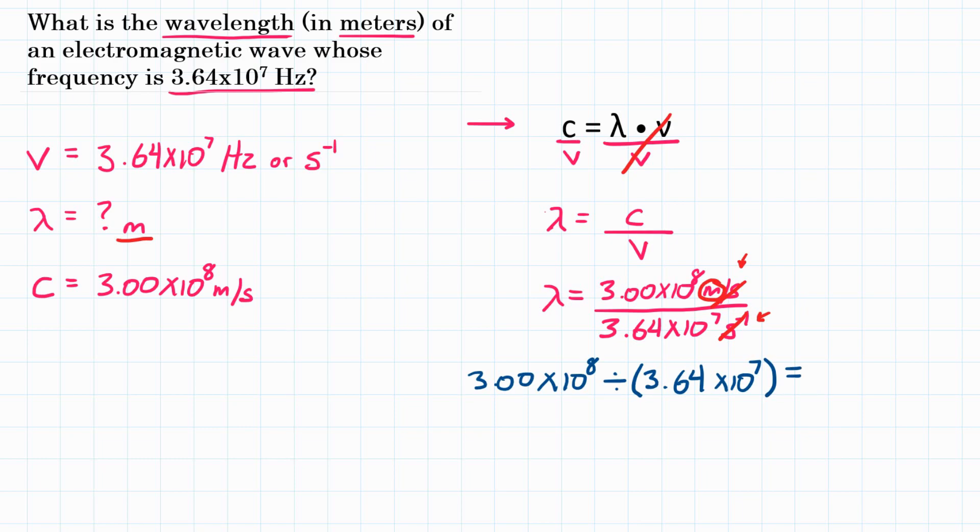Quick lesson here, if you don't put that in parentheses or if you don't use potentially the EE button on your calculator, what your calculator is going to do is all of this math first, it's going to get that, and then multiply by 10 to the 7th.